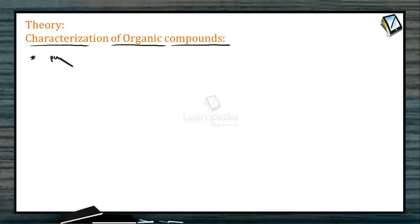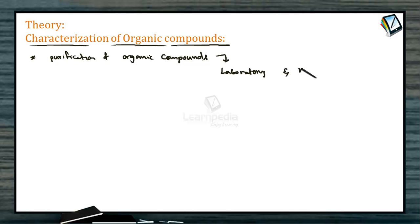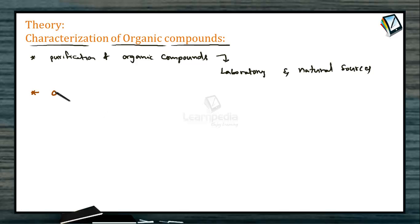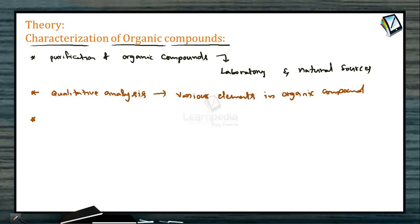The first step is purification of the organic compound. What you have prepared from the laboratory or natural sources contains some impurities, and by using purification methods you can easily purify the given organic compounds. Next is to identify the various elements which are present in the organic compound — that is called qualitative analysis — where you find out the various elements present.